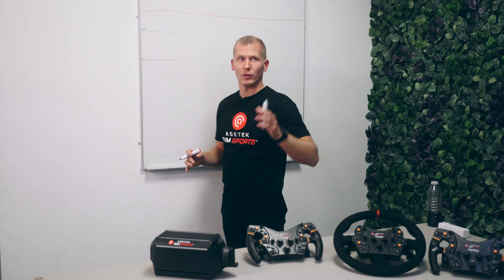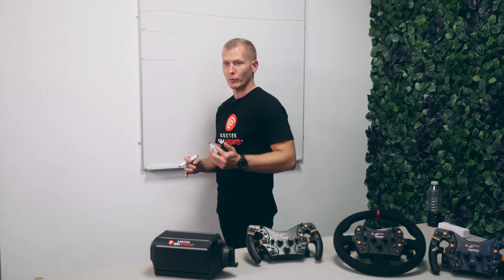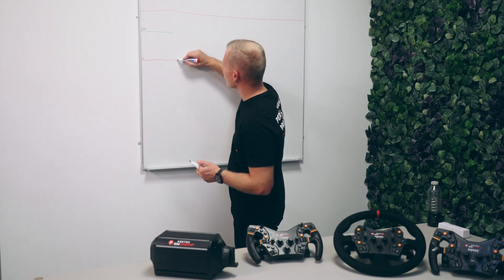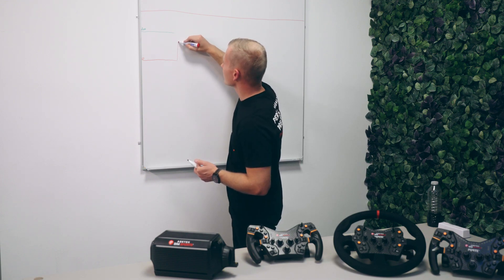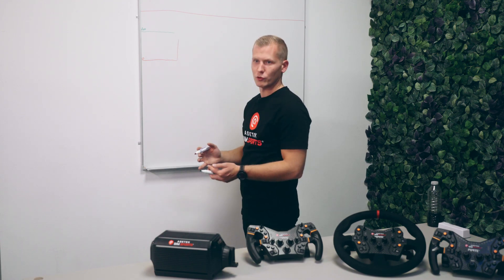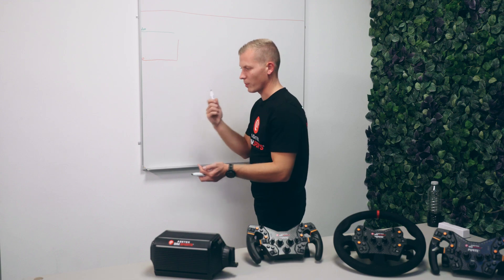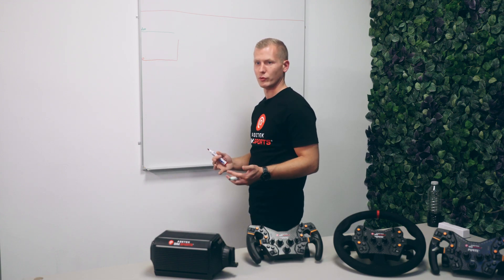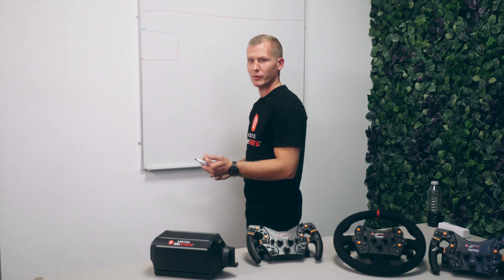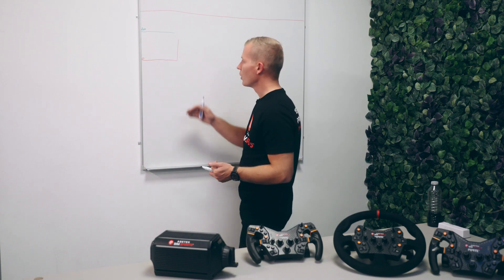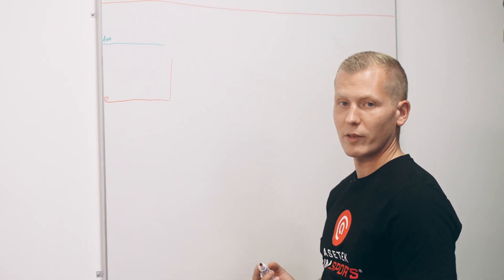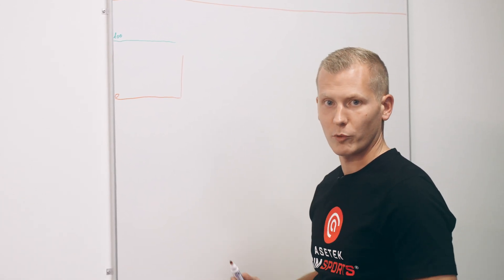So at the hundred-meter marker, the start of the curb - the braking reference we talked about earlier - you're going to try to apply as much maximum pressure as fast as possible, depending on the car you're driving. If it's a Formula One, you can apply a lot of braking pressure. If it's a GT3, maybe a little bit less. If it's a Mazda MX-5, a little bit less again. So you try to find how much you can apply depending on the car, before you start locking up the brakes.